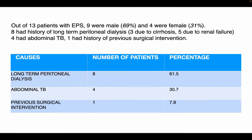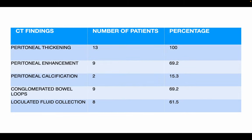Out of 13 patients, 9 were male and 4 were female. Eight had a long-term history of peritoneal dialysis, 4 had abdominal TB, and 1 had a history of previous surgical intervention. CT findings included peritoneal thickening in all 13 cases, peritoneal enhancement in 9, peritoneal calcification in 2, conglomerated bowel loops in 9, and loculated fluid collection in 8.